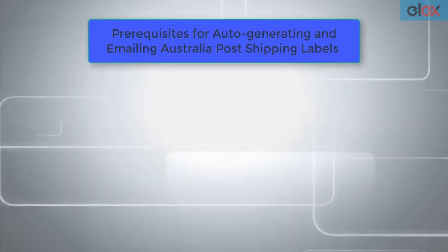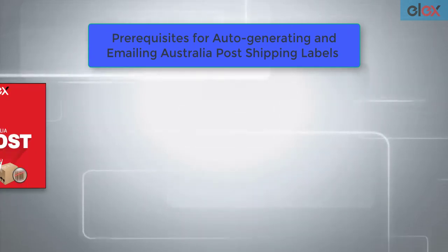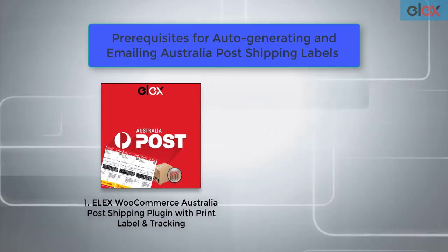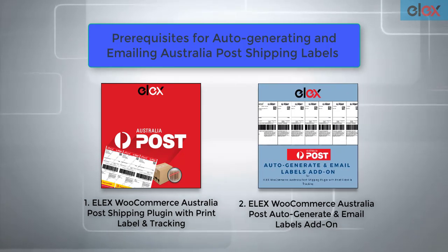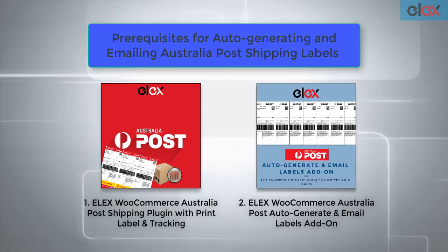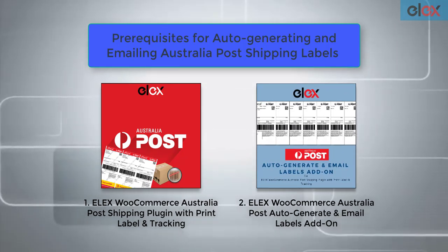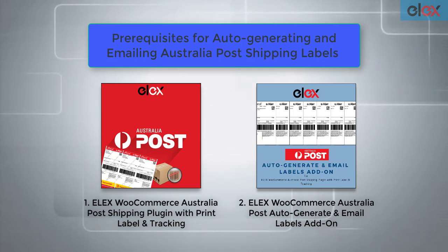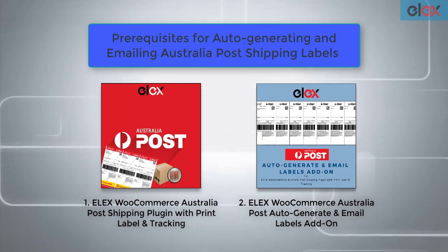To do this, we need two things: the Elix WooCommerce Australia Post shipping plugin, and Elix WooCommerce Australia Post auto-generate and email labels add-on. This add-on will only work for the Elix Australia Post plugin.